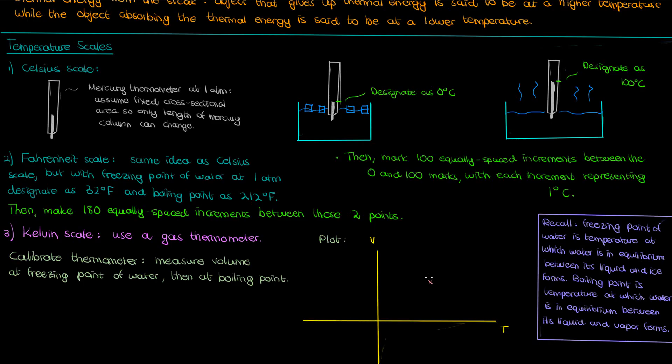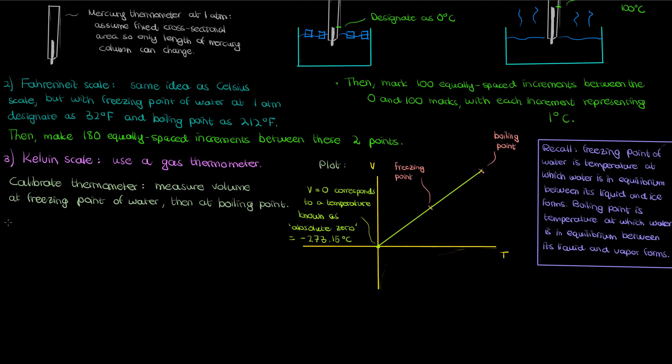You can then plot your volumes on a graph against temperature and draw this line which gives you a relationship between the volume of your gas thermometer and the actual temperature. If you take this line and you extrapolate it all the way to some theoretical temperature where the volume of the gas is zero, you get a temperature known as absolute zero, which comes out to something like minus 273.15 degrees Celsius. And this is how you start your Kelvin temperature scale.